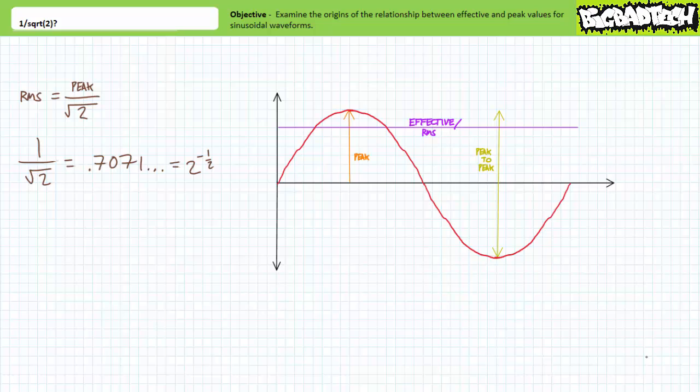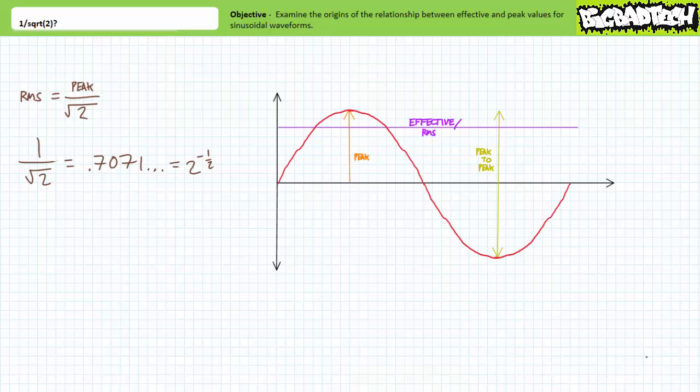Recall during the previous lectures, we firmly established that the effective or RMS value of a sinusoidal waveform is approximately 70.7% of its peak value, where 70.7% can alternatively be expressed as the decimal value 0.7071, one over square root two, or two raised to the negative one half. As can be expected, this value is less than one.